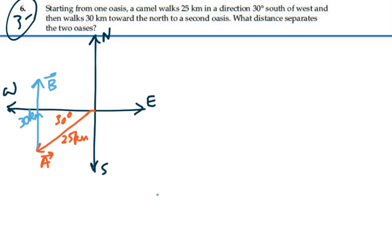And the resultant vector then would be the sum of those two vectors, which I could call C here. And that will be the displacement between my two oases.